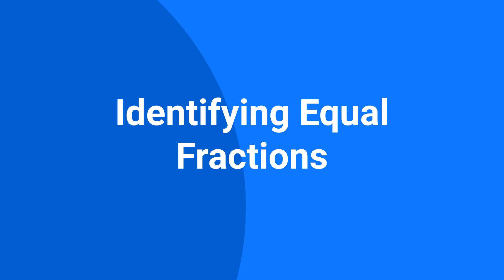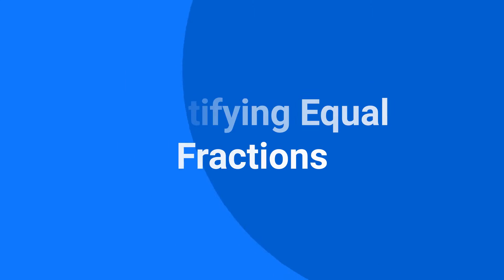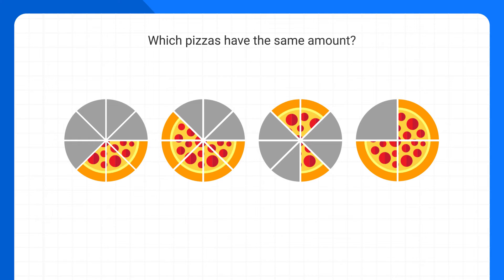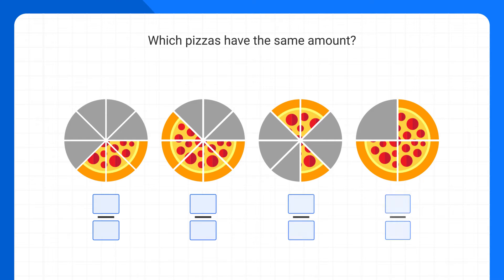Today we're going to be learning how to identify equal fractions. I want to start by talking about pizza. Let's say you looked at a table and saw some pizzas on it, and you wanted to figure out which pizzas have the same amount. Well, you might start by trying to label the amount of each pizza using a fraction.